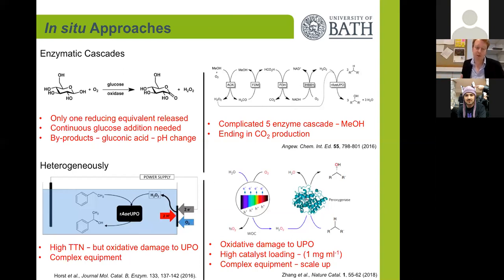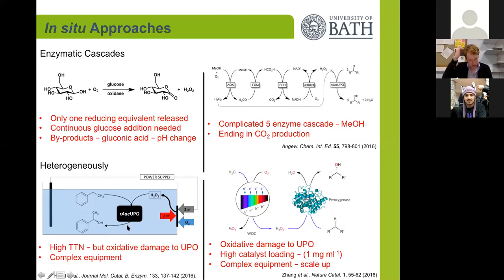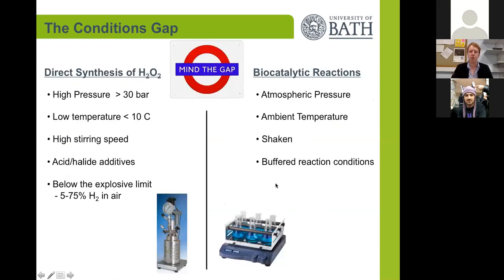Heterogeneous approaches have also been studied, such as electrochemical production of hydrogen peroxide. However, this can cause a lot of oxidative damage to the enzyme. More recently, a titania-based photocatalyst was used to produce hydrogen peroxide to feed this enzyme in one pot. So we wanted to combine our hydrogen peroxide technology with this biocascade.